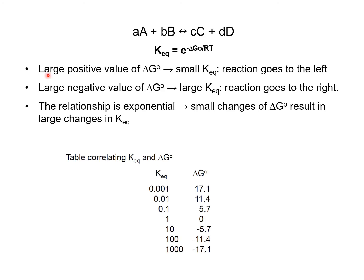A large positive value of delta G° means a small K_eq value, and the reaction will go to the left. A large negative value of delta G° means a large K_eq value, so the reaction will go to the right. The relationship is exponential, and you can see in this table how small changes in delta G° result in large changes in K_eq, and vice versa.